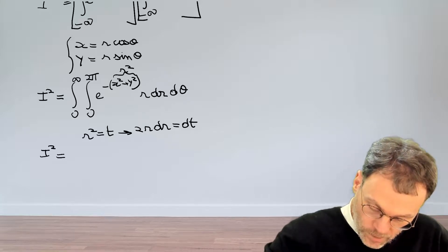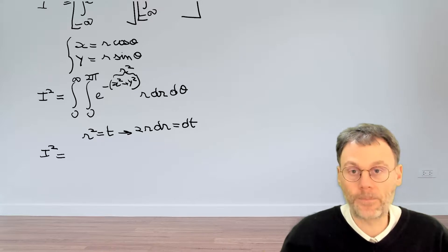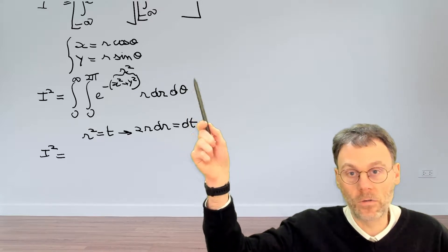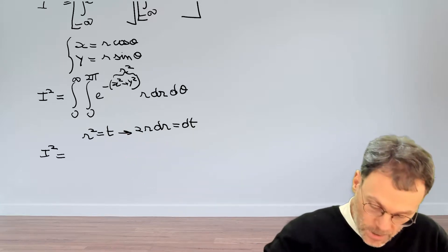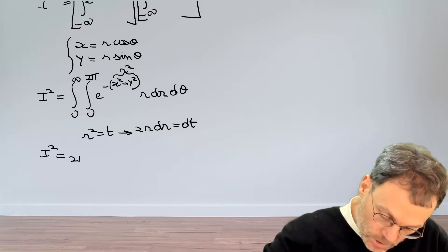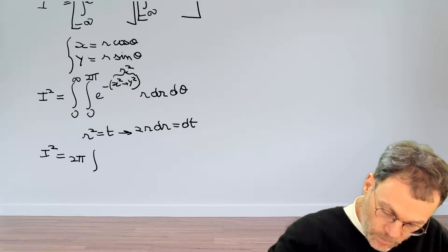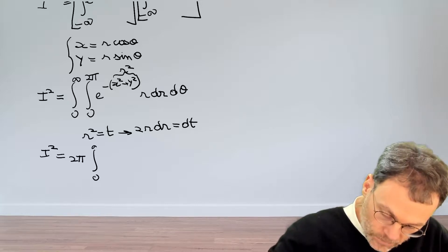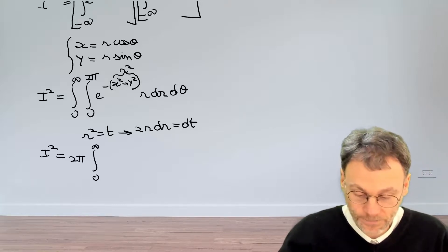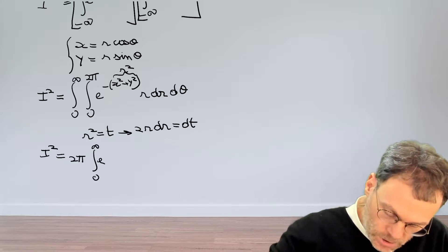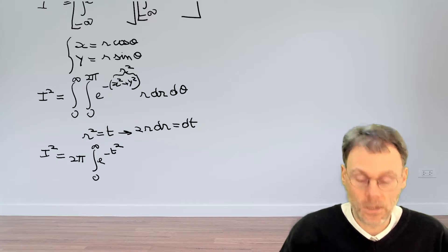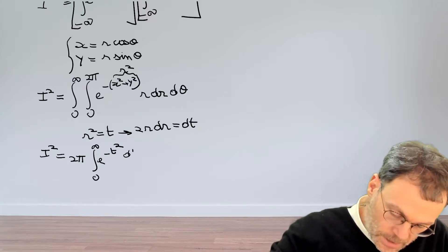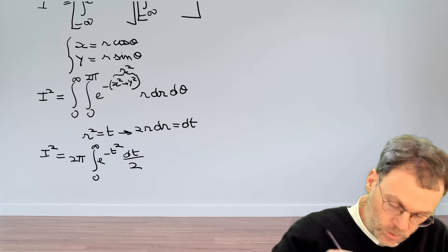So the square of our integral is, and then let's first focus on the integral over d theta. So there's nothing happening here with respect to theta. So we can just do that separately. So that becomes 2 pi. And then we have the integral still from 0 to infinity, exponential minus t squared. And then r dr, that becomes dt divided by 2.